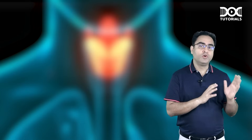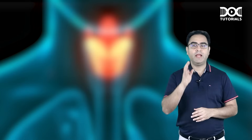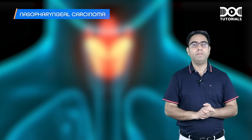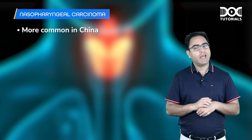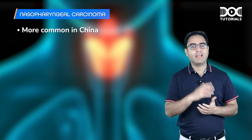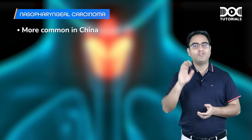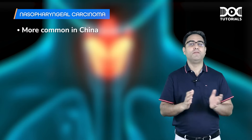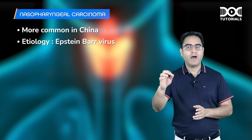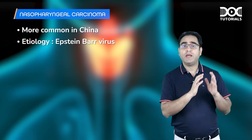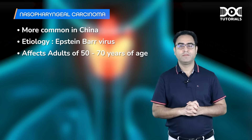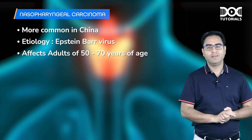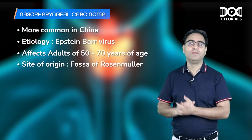After discussing the benign tumor angiofibroma, let us discuss the malignancy of the nasopharynx — nasopharyngeal carcinoma (NPC). This cancer is more common in China, and the causative virus is Epstein-Barr virus. The patient is typically an adult aged 50–70 years. The site of origin is the fossa of Rosenmüller.